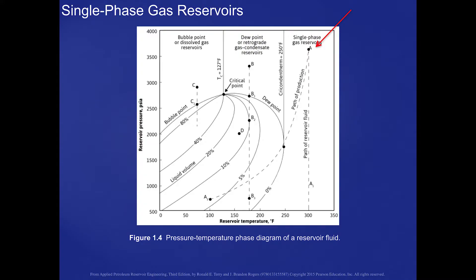You might remember when we were discussing the different reservoir types in Chapter 1, we looked at, in Figure 4, various types of reservoirs, and the single-phase gas reservoir was on the right-hand side of that figure, as you can see in this slide. What we mean by a single-phase gas reservoir is that during the life of the production, the hydrocarbon phase in the reservoir itself will remain as a single-phase gas.